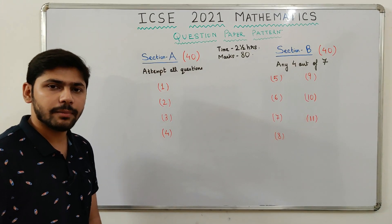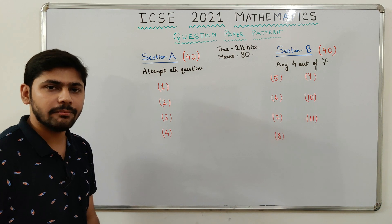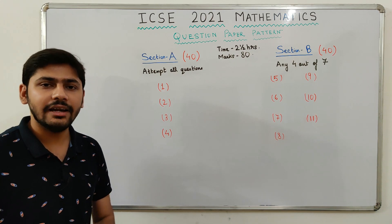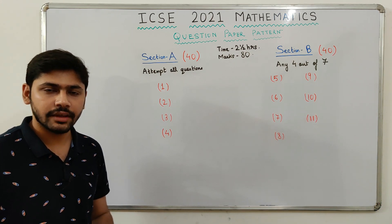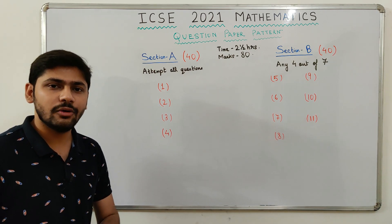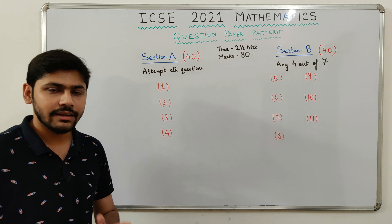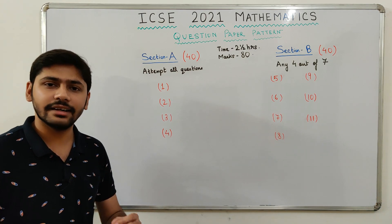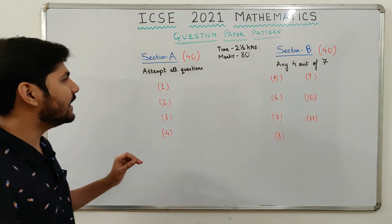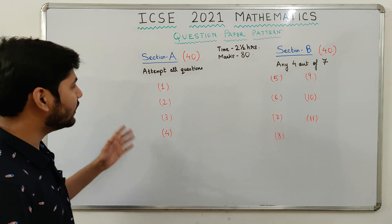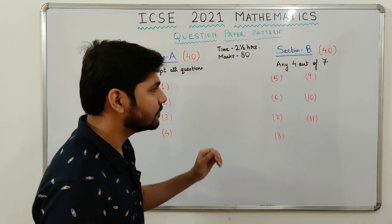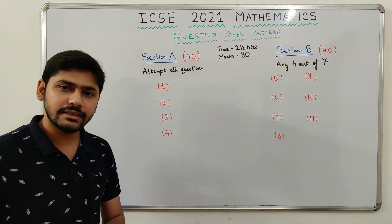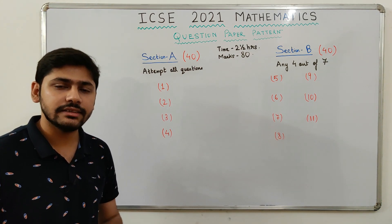Moving on to the question paper pattern for the ICSC 2021 Mathematics Board Examination. The paper will be 80 marks, with two and a half hours writing time and 15 minutes reading time. The question paper is divided into two sections: Section A worth 40 marks and Section B worth 40 marks. Let's begin with Section A.